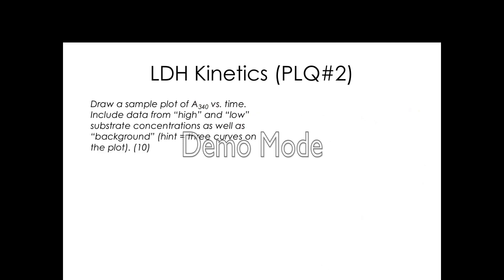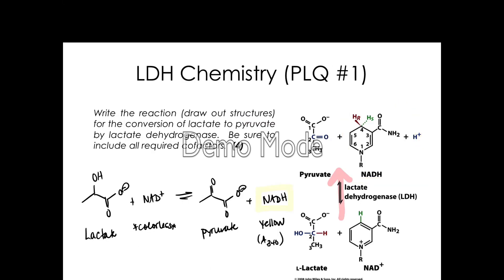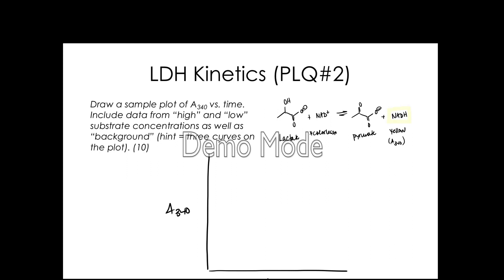The last part asks us to draw a sample plot of A340 as a function of time. Thinking about what's happening as this reaction progresses, we're going to see an increase in the concentration of the NADH product. This question asks about background, high, and low concentrations. For low lactate concentration, drawn as a dotted line, we'd expect to see an increase in A340 as a function of time.